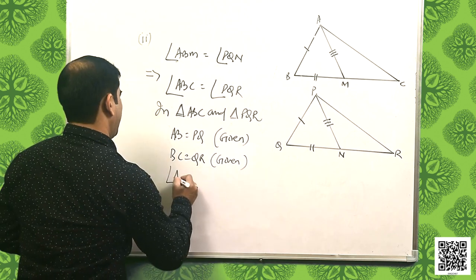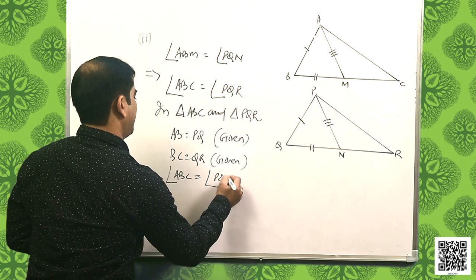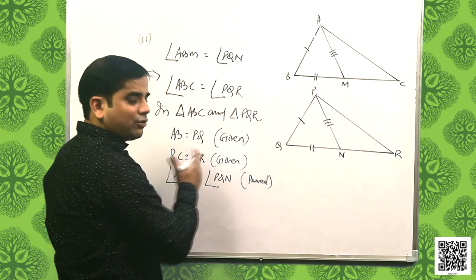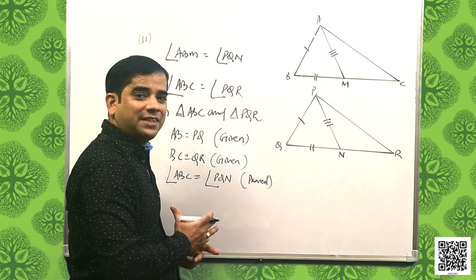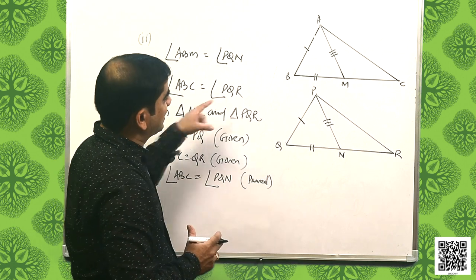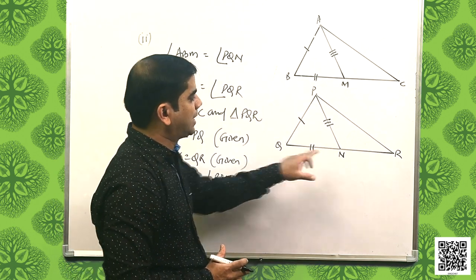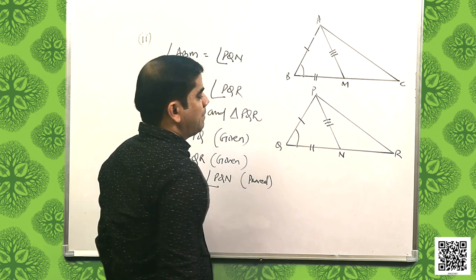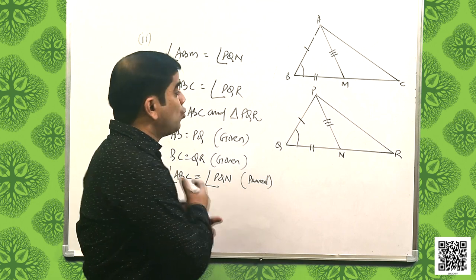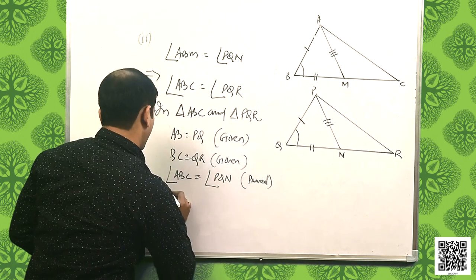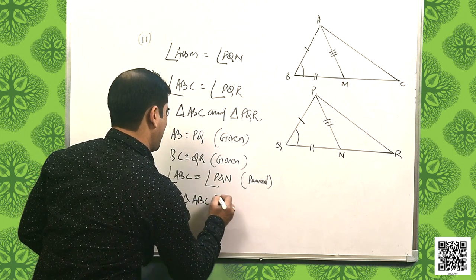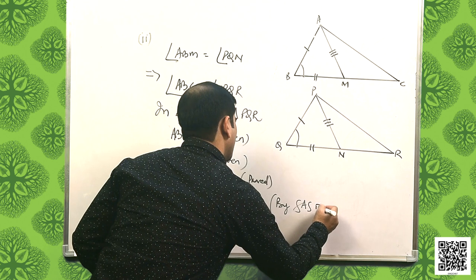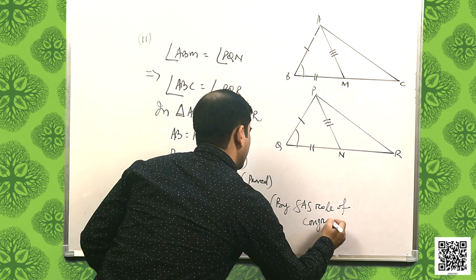We have angle ABC equal to angle PQR, already proved. Now we have three data points: AB is equal to PQ, BC is equal to QR, and the included angle ABC is equal to angle PQR. These satisfy the SAS rule of congruency, so triangle ABC is congruent to triangle PQR by SAS rule.